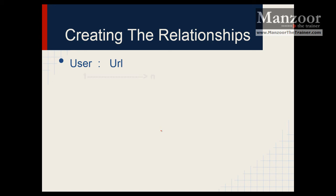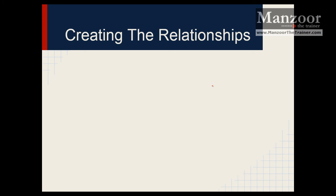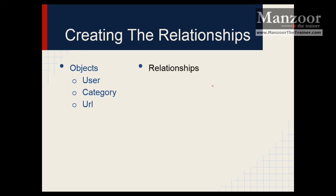Next, user and URL. One user can submit N number of URLs. In the reverse case: can one URL be submitted by N number of users? No, one URL cannot be submitted by N number of users. So N-to-N is out of the question — we get a one-to-many relationship here as well. So the objects we found are: user, category, and URL. And the relationships are: category to URL — one-to-many; user to URL — one-to-many.